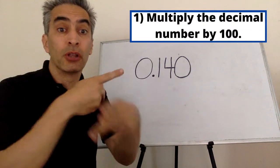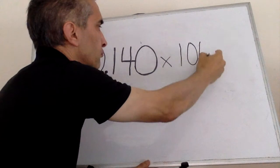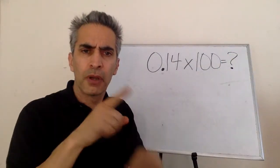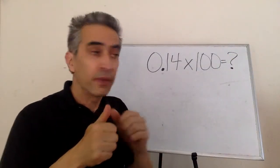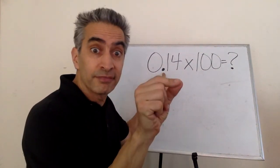What are we doing? How do we multiply by 100? We take this decimal point and we move it two spaces to the right.